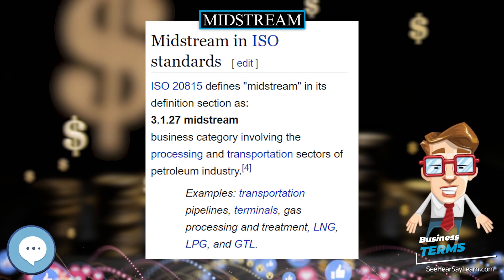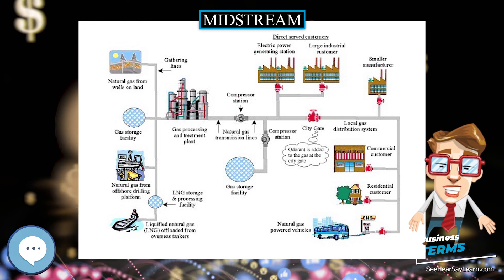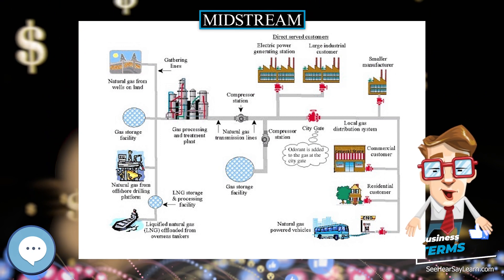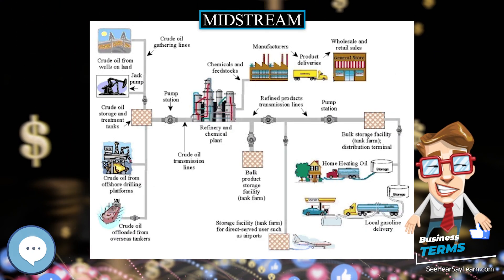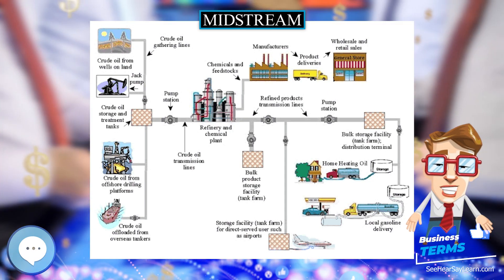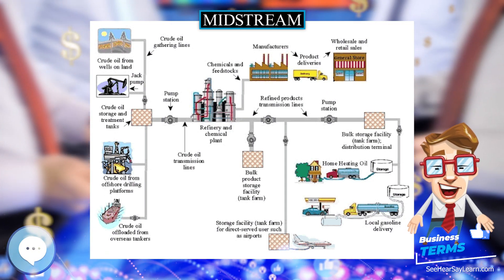Natural gas pipeline networks aggregate gas from natural gas purification plants and deliver it to downstream customers, such as local utilities.